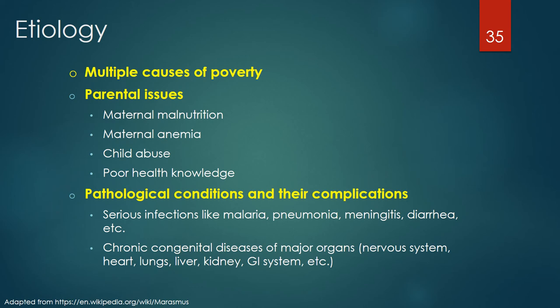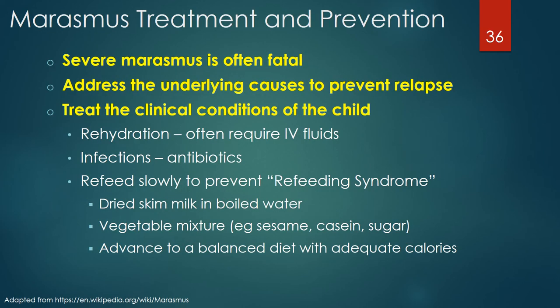Severe marasmus is often fatal, particularly when the body is no longer able to synthesize proteins — at this point, refeeding will fail. Treatment and prevention of marasmus include addressing the underlying causes to prevent relapse. Many times this will require addressing poverty or other social determinants of health by using community engagement techniques.